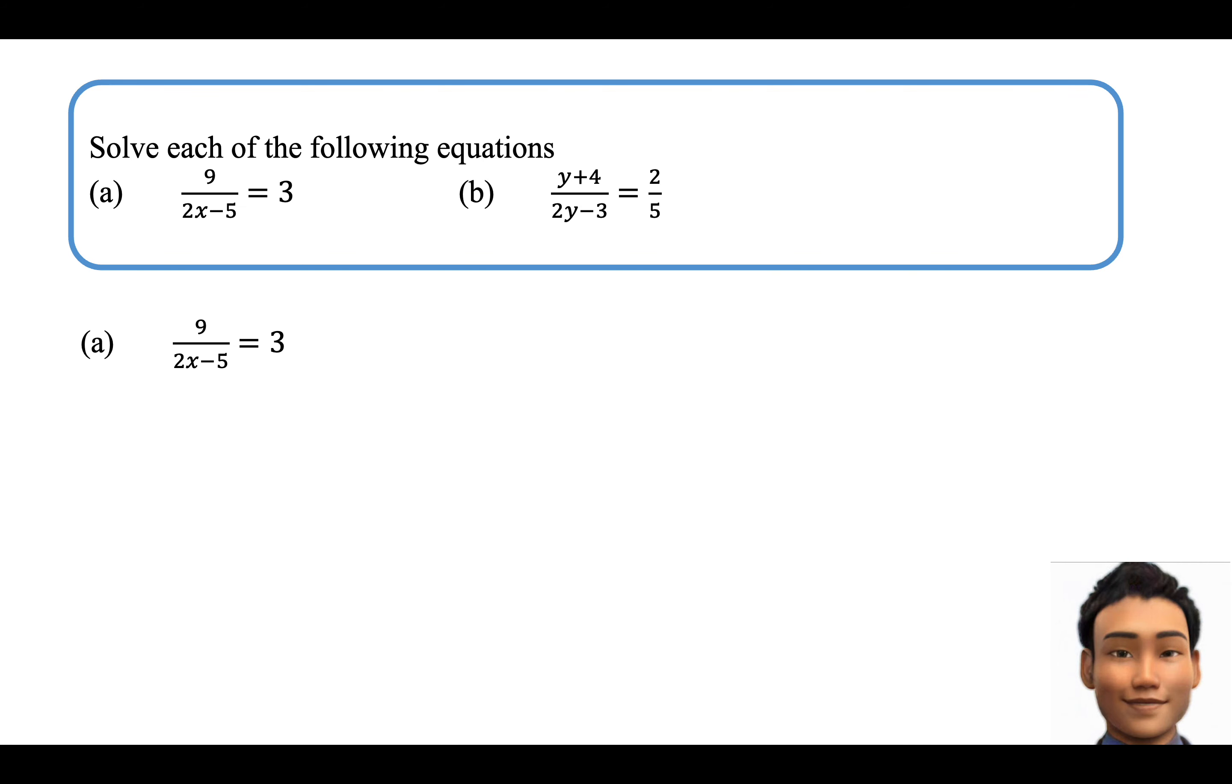Part A. 9 over 2x minus 5 equals to 3. What we have here is some kind of expression in the denominator. How we can proceed to solve this type of equation is to treat the entire denominator as a single factor and multiply it on both sides.